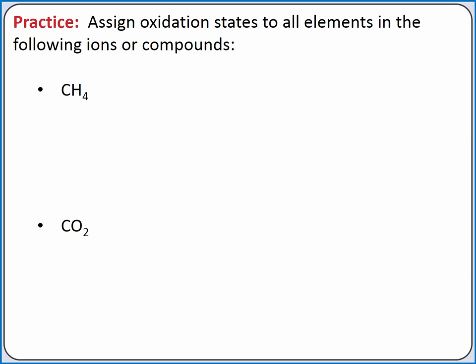Let's practice assigning oxidation states. We'll start with methane, CH4. Methane is not a free element or a monatomic ion, so the most important rule that applies is our third rule: the sum of the oxidation states of all the atoms in methane is equal to zero, since methane is a neutral molecule. So carbon plus 4 hydrogen equals zero. From our table of nonmetals, hydrogen has a +1 oxidation state. Solving for carbon, we get −4. So carbon has an oxidation state of −4 and hydrogen an oxidation state of +1 in methane.